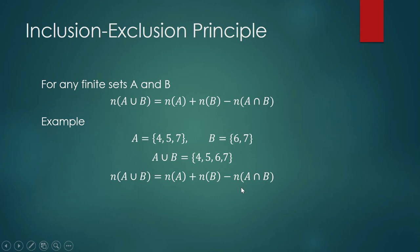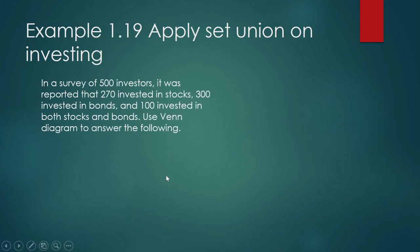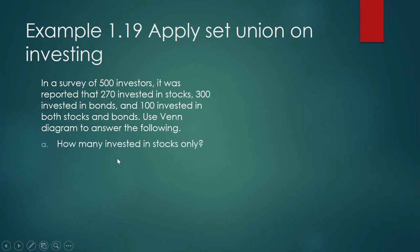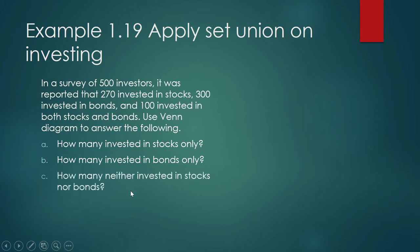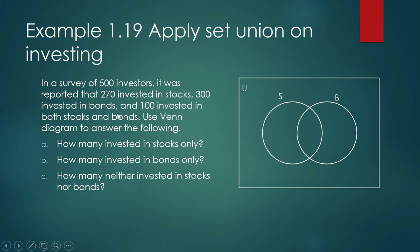Apply set union on investing. In a survey of 500 investors, it was reported that 270 invested in stocks, 300 invested in bonds, and 100 invested in both stocks and bonds. Use a Venn diagram to answer: how many invested in stocks only, how many in bonds only, and how many invested in neither stocks nor bonds. Let this be our universal set, with S the set of investors in stocks and B the set of investors in bonds. The technique is to begin at the set intersection.